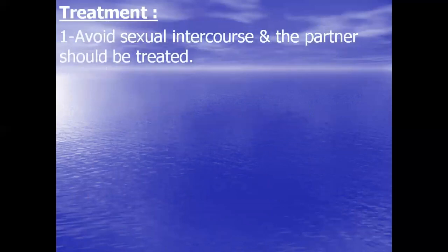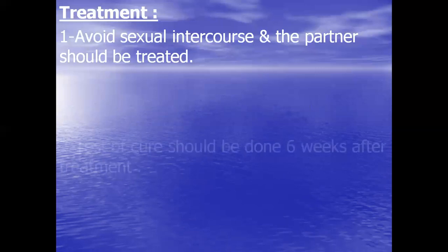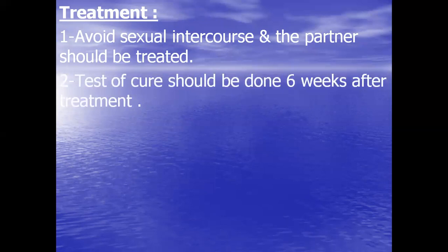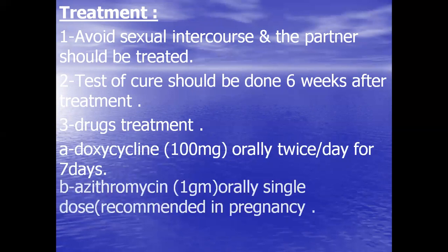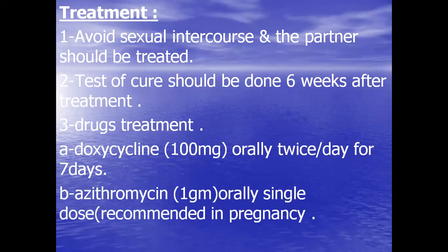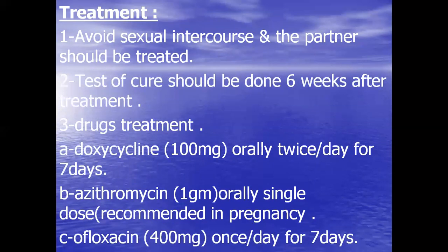Treatment of chlamydia: advise the patient to avoid sexual intercourse, treat the partner, and perform a test of cure six weeks after treatment. Drug treatment: doxycycline 100 mg orally twice a day for seven days. Azithromycin 1 g orally single dose, recommended in pregnancy, as doxycycline is contraindicated in pregnancy. Ofloxacin 400 mg once a day for seven days is an alternative.